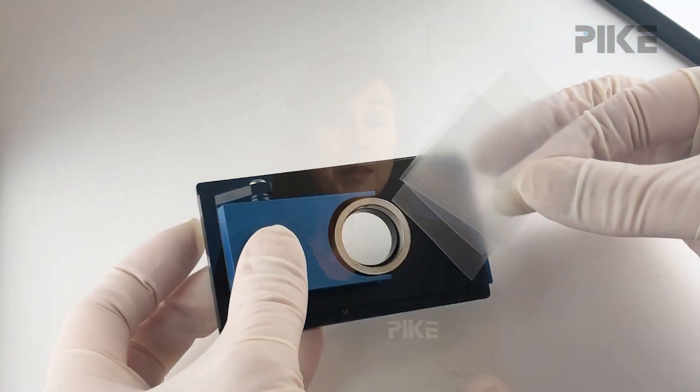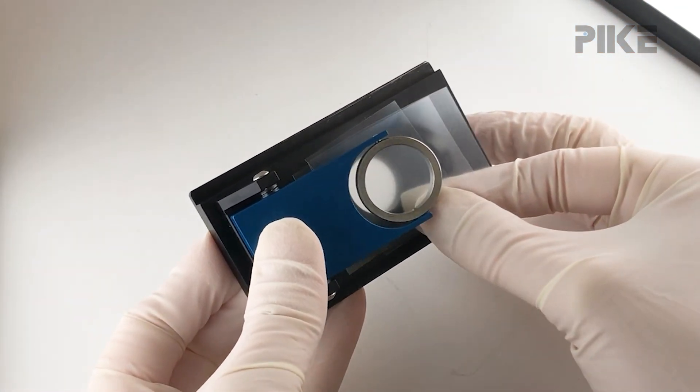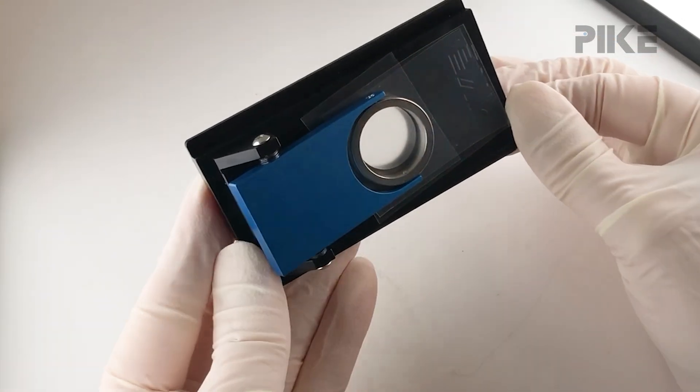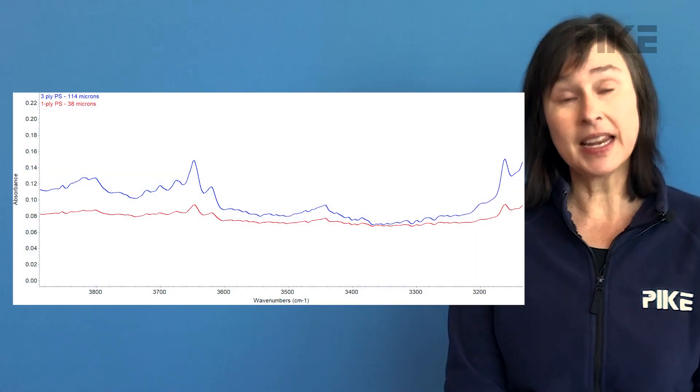Well, keep in mind absorbance is proportional to the sample path length. So let's just increase that sample path length. When you're making film measurements, one of the ways you can do that is double up, triple up, or more the layers of film. And now you can see the difference it made in the absorbance band strength.